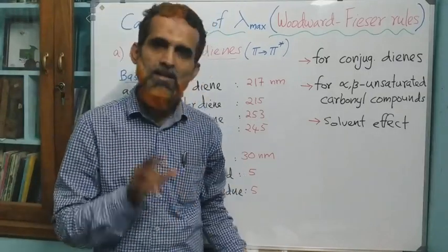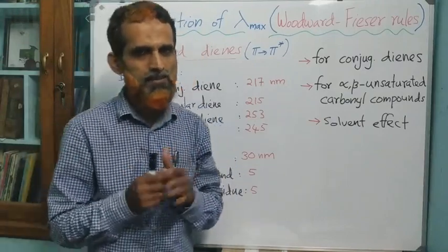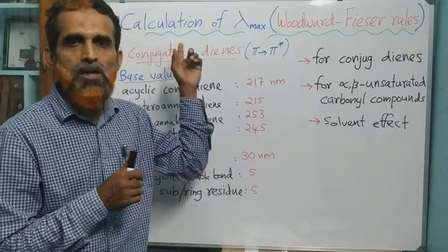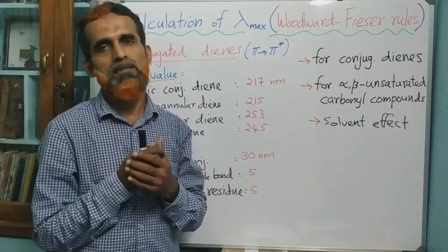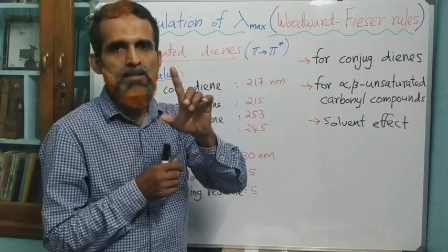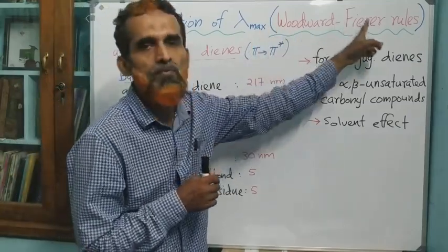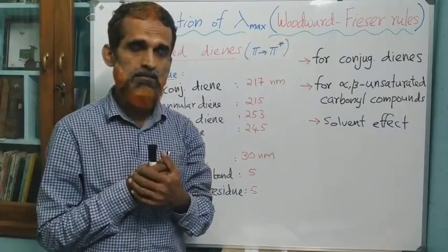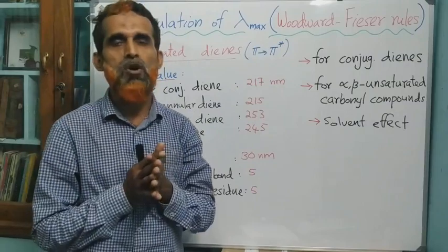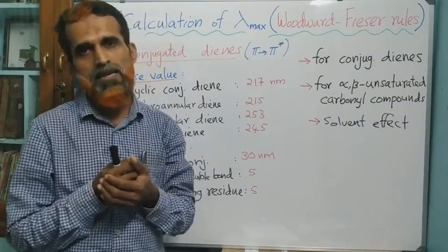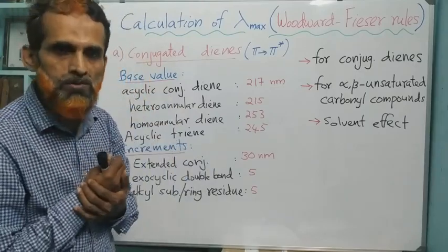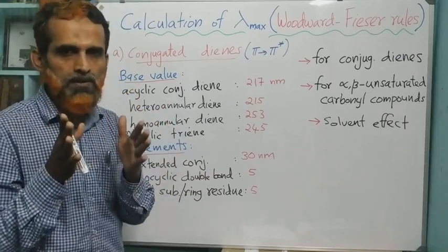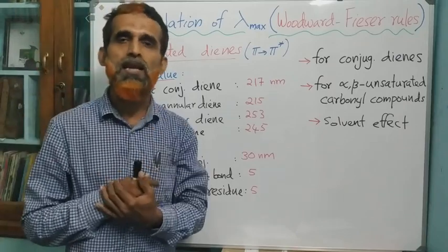Welcome to today's online class. Today we discuss the last part of UV-visible spectroscopy — the calculation of lambda max of certain classes of organic compounds based on some empirical rules called the Woodward-Fisher rules. Woodward and Fisher studied the electronic spectra of a large number of molecules and formulated these additive empirical rules.